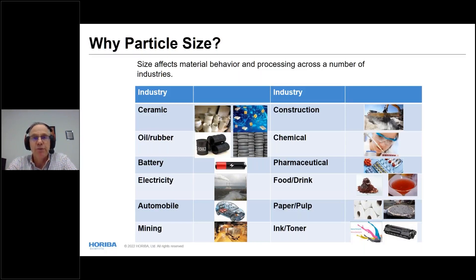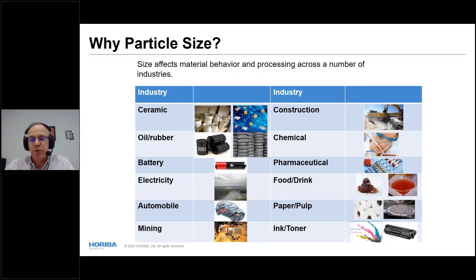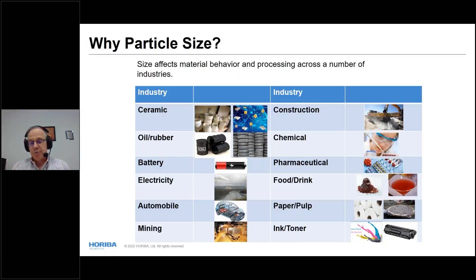Particle size drives the performance and manufacturability in many industries. For ceramic powders, particle size affects density and compaction. In construction and chemical industries, it affects flow and reactivity. In pharmaceuticals, it affects tablet compaction and dissolution rate. Batteries use particle slurries for cathodes, anodes, and so on. We have a number of webinars covering many of these areas on our website.